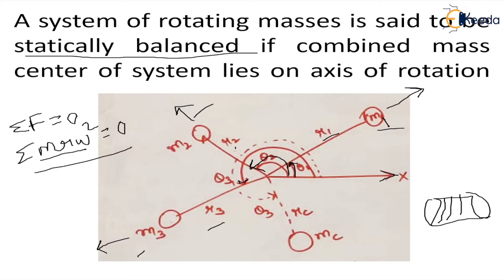If this condition is satisfied, the three masses are statically balanced. But if the summation of forces is not equal to zero, we introduce a counter mass in such a way that the resultant of forces becomes zero. That means summation of mr·ω² plus mc·rc·ω² equals zero. By adding this counter mass, we shift the center of mass to the axis of rotation, and the system becomes statically balanced.